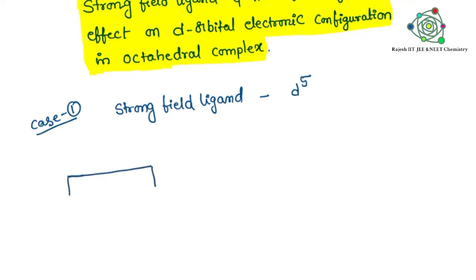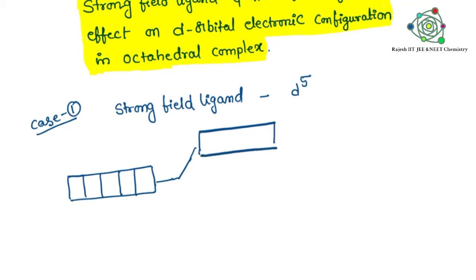For the d5 configuration, we start with the d-orbitals — there are 5 d-orbitals. In the ground state, these d-orbitals have degeneracy. When ligands come closer, the d-orbital energy increases, moving from the first position to the second position. These are all d-orbitals — 5 boxes here and 5 boxes here — representing 5 electrons.